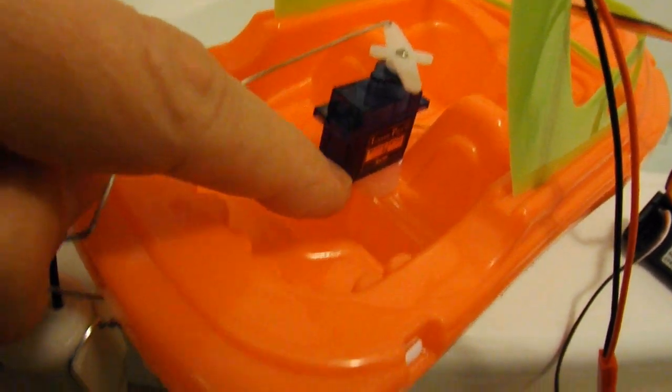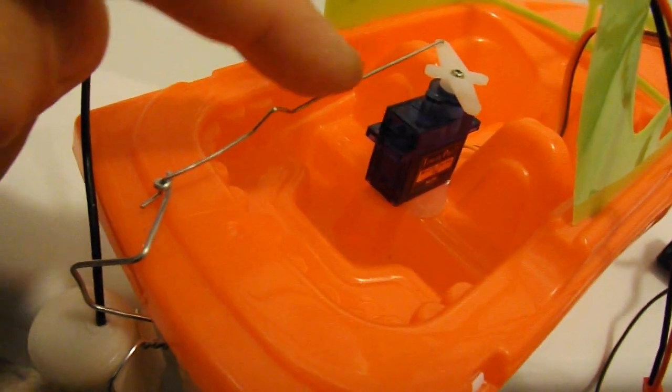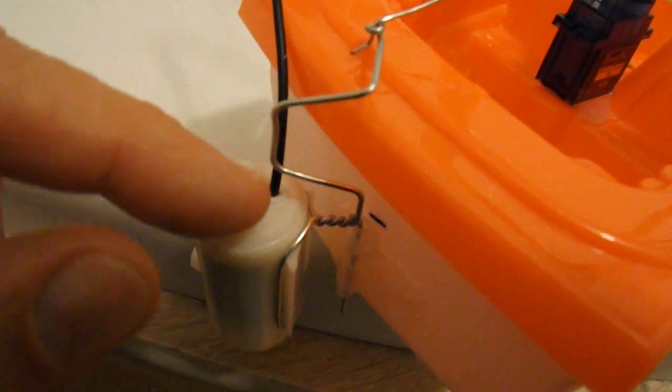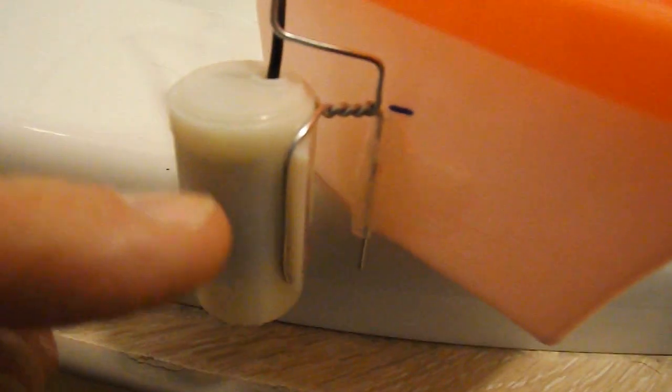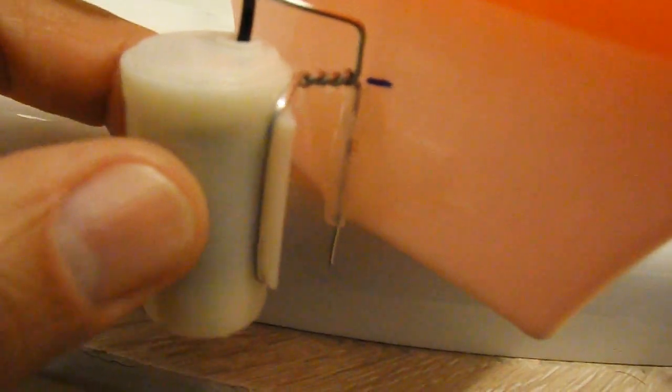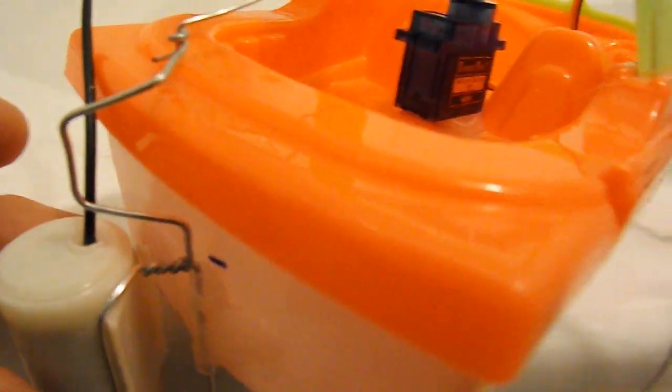Hot glue the servo straight into the back of the boat there. Bent paper clip onto the lever arm. Bit of plastic tubing just there, just hot glued to the back of the boat. So that's what this is going to pivot on. It's a bit loose, but I think we'll get enough to steer the boat.